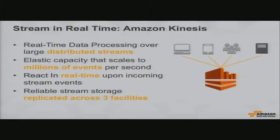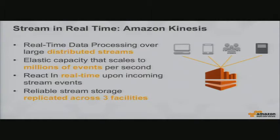For stream storage, Amazon Kinesis gives you distributed streams that scale to virtually any capacity and throughput — millions of events per second, no problem. The important part is that you can react in real time upon events that come into that stream. It's fully managed and highly available, replicated across three facilities, so whenever you put something into that stream it's replicated into three different data centers within your chosen region.